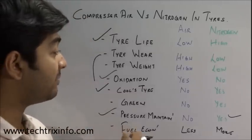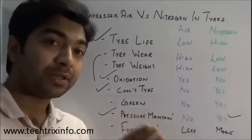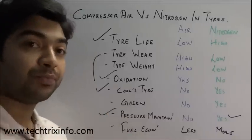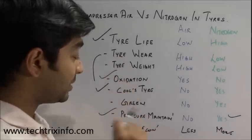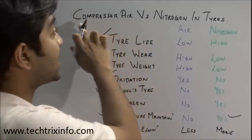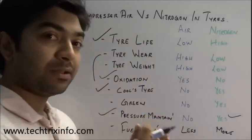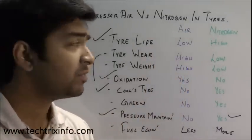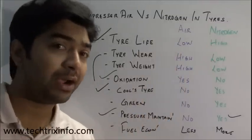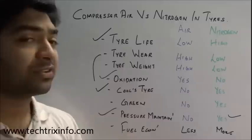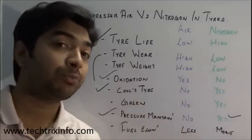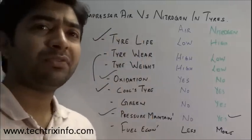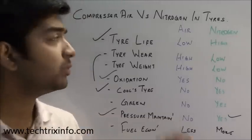Better tire pressure also means less engine load and improved fuel economy. Regarding cost, compressed air is cheaper — in India you can fill all four tires for about 5 rupees. Nitrogen costs more — about 5 dollars per tire in the US and UK, or about 250 rupees for all tires in India, with top-ups costing around 30 to 50 rupees.